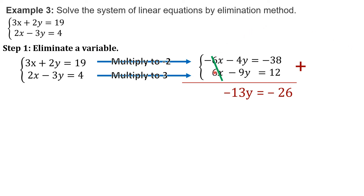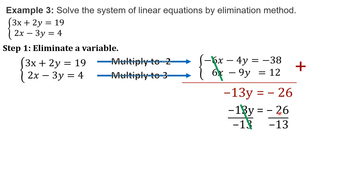Since we have eliminated the variable x, we are now solving for y. We have to cancel this negative 13 by dividing both sides by negative 13. Cancel. Negative 26 divided by negative 13 — they are both negative, so you may cancel the negative signs. It will give us positive 2. So, y is equal to positive 2.